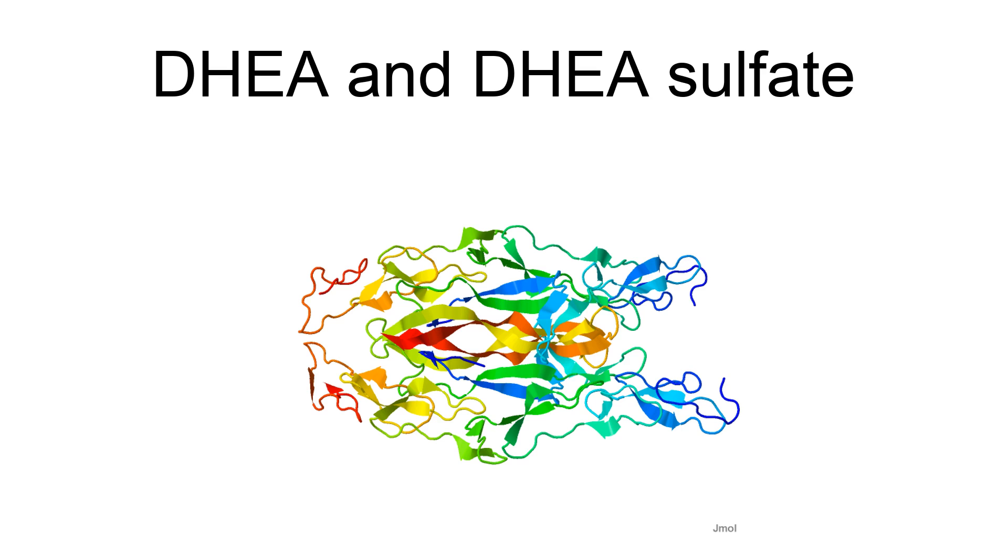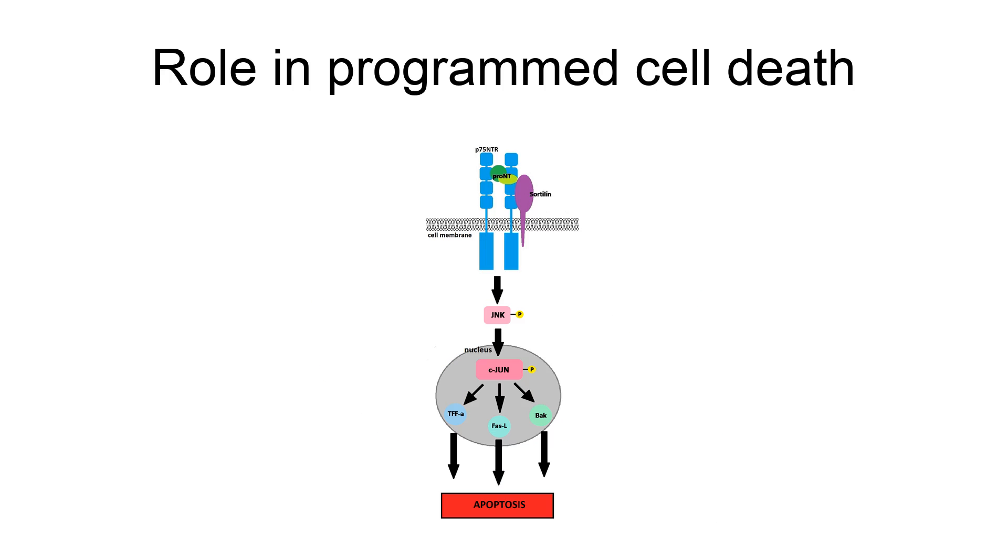During neuron development, neurotrophins play a key role in growth, differentiation, and survival. They also play an important role in the apoptotic programmed cell death (PCD) of neurons. Neurotrophic survival signals in neurons are mediated by the high-affinity binding of neurotrophins to their respective TRK receptor. In turn, a majority of neuronal apoptotic signals are mediated by neurotrophins binding to the P75NTR. The PCD which occurs during brain development is responsible for the loss of a majority of neuroblasts and differentiating neurons.